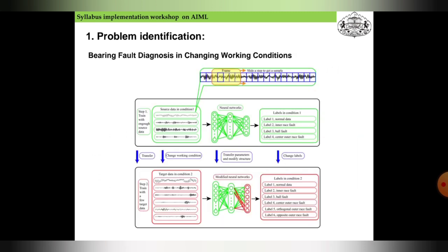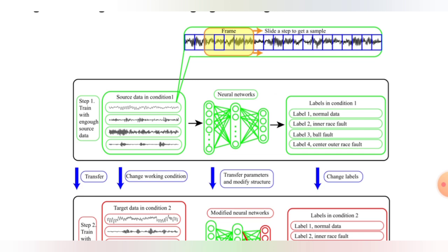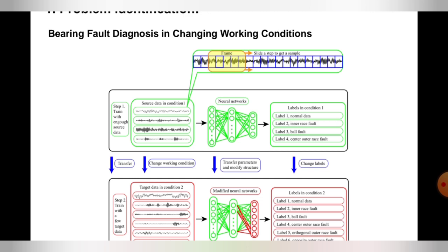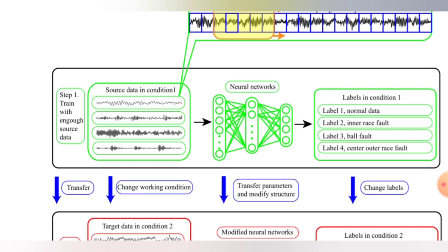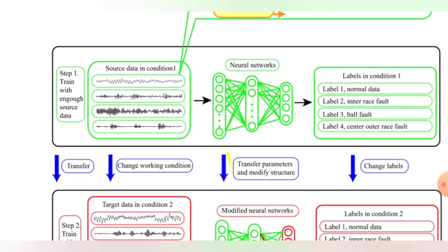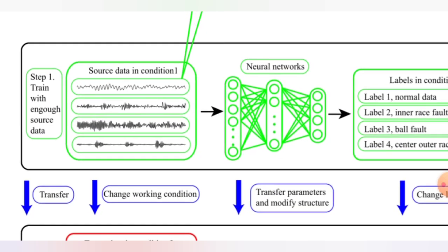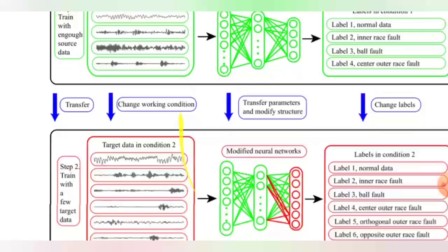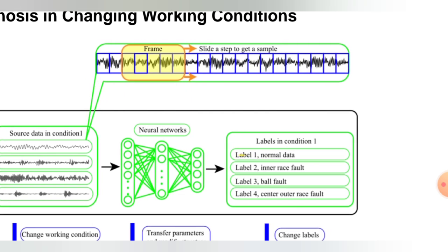Now come to the next example: bearing fault diagnosis in changing working conditions. Here you can see the bearing will fault in changing working conditions. As the bearings start to wear and tear, they start failing and make noise. In step one, you train with enough source data, and the source data is condition one. Here the frequency signals are given. This is in green stage, in working stage.